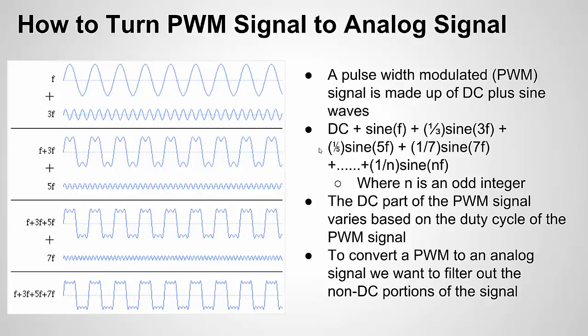Any waveform or any signal can be represented either as DC or as a summation of different sine waves. And for a pulse width modulated signal, which is essentially a square wave signal, you have both DC elements and then you have sine wave elements. And if you look at the picture on the left, you can kind of see how from a fundamental sine wave frequency, we can add more sine waves and it starts to look like a square wave.